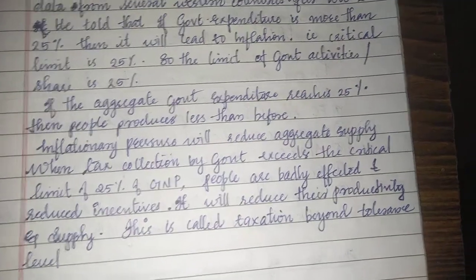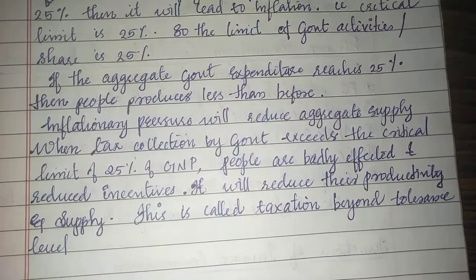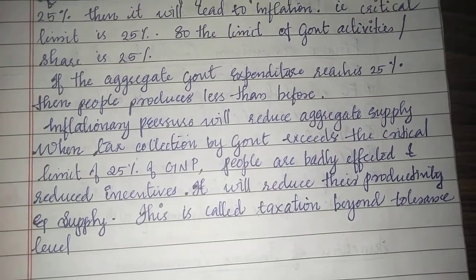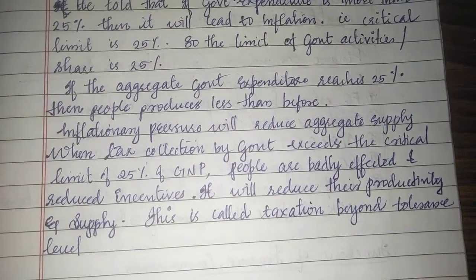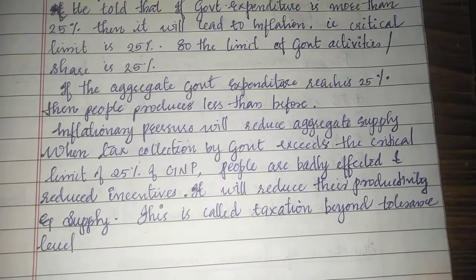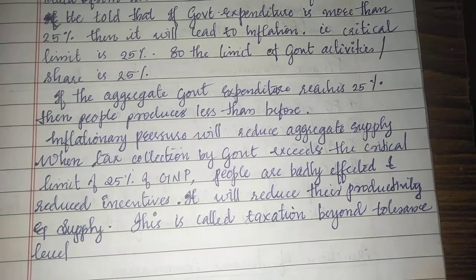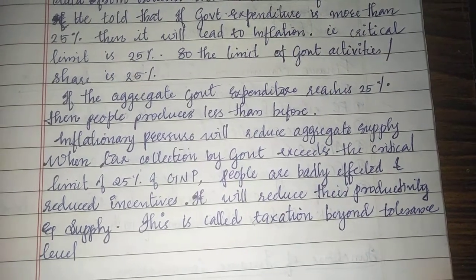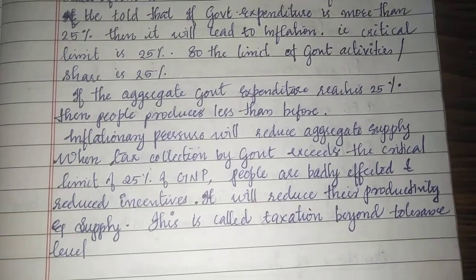If the aggregate government expenditure reaches 25% of GNP, people produce less than before. The inflationary pressure will reduce aggregate supply when tax collection by the government exceeds the critical limit of 25% of GNP.